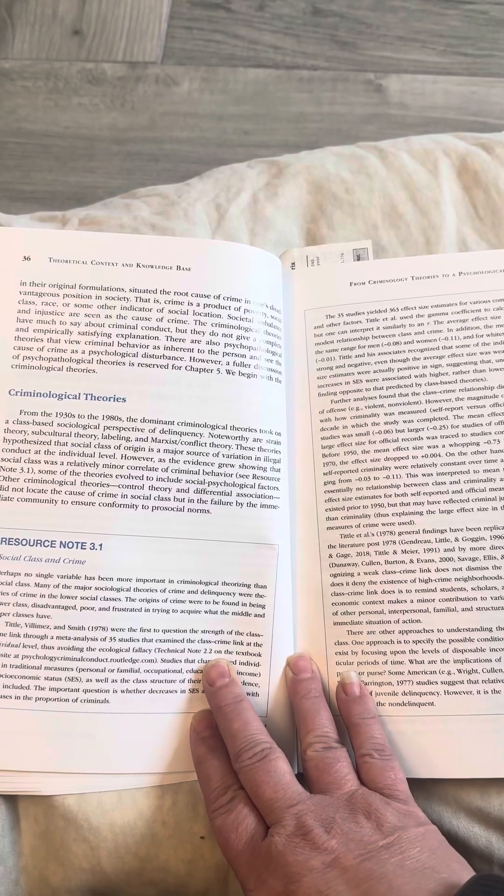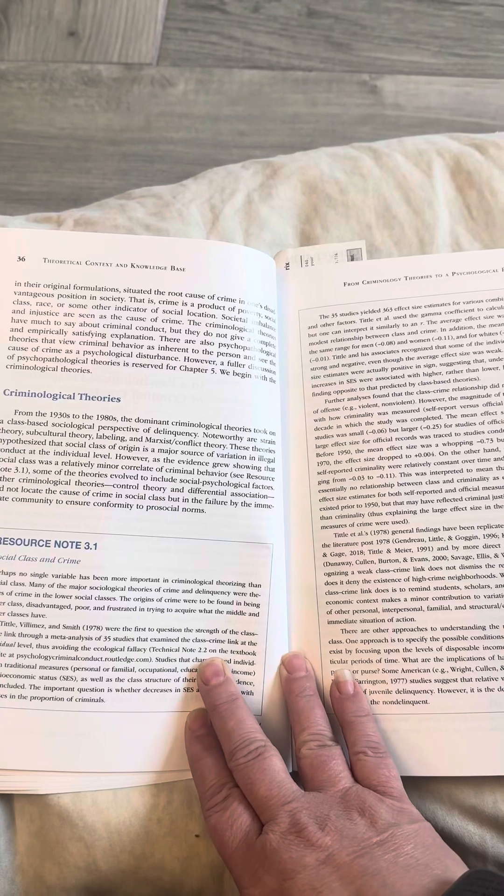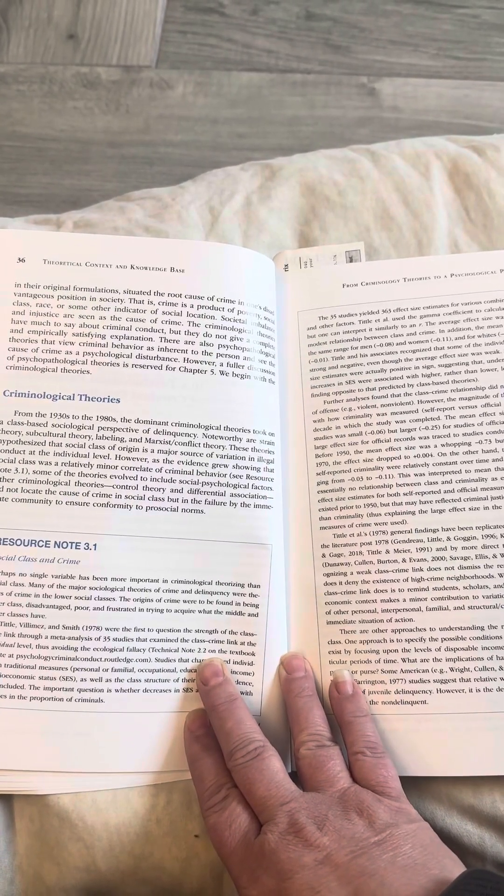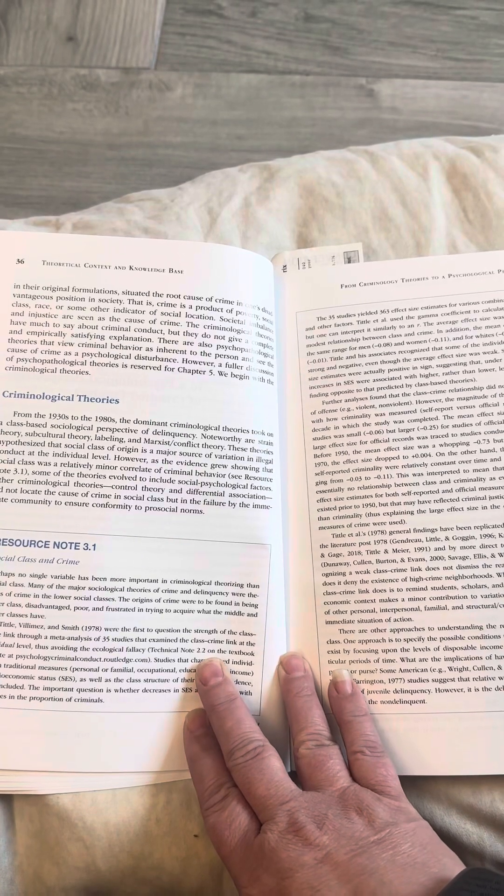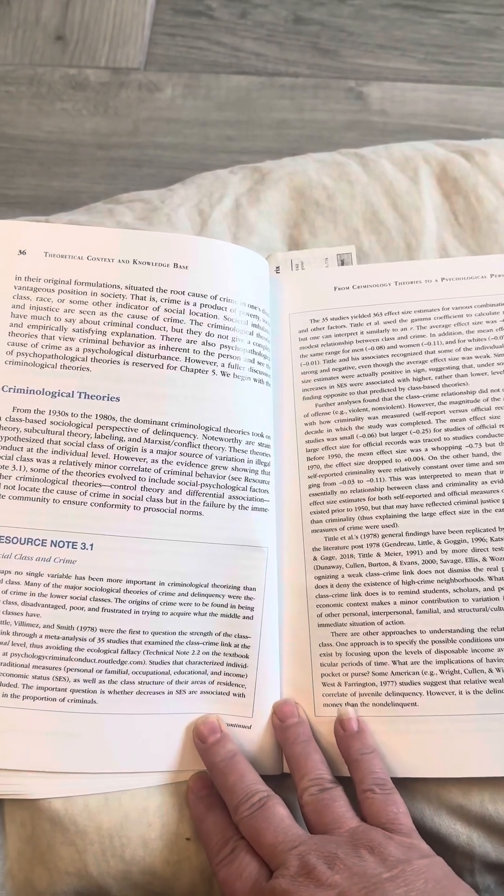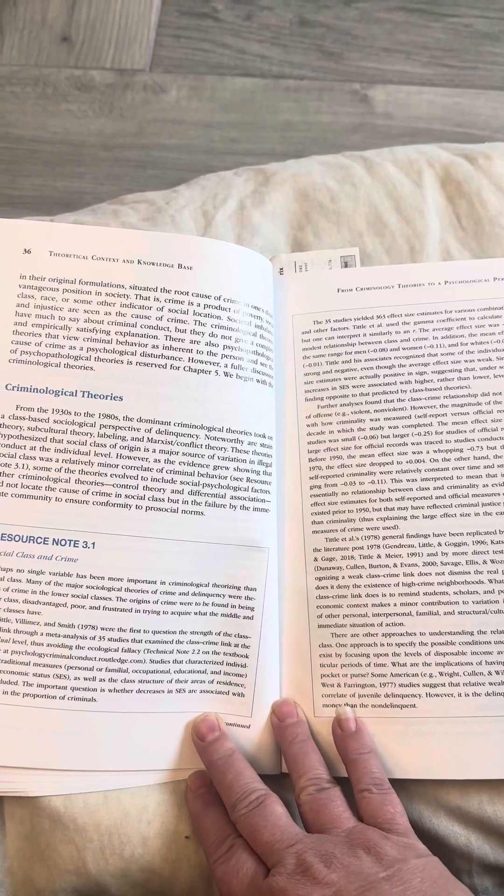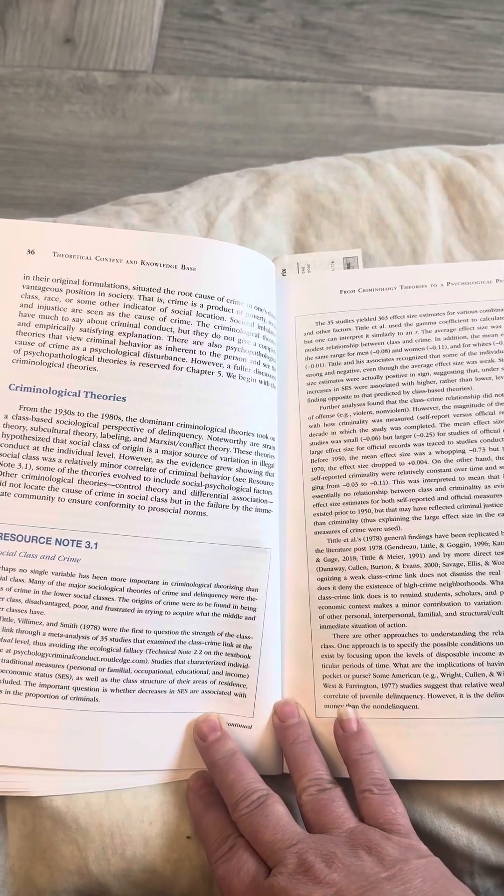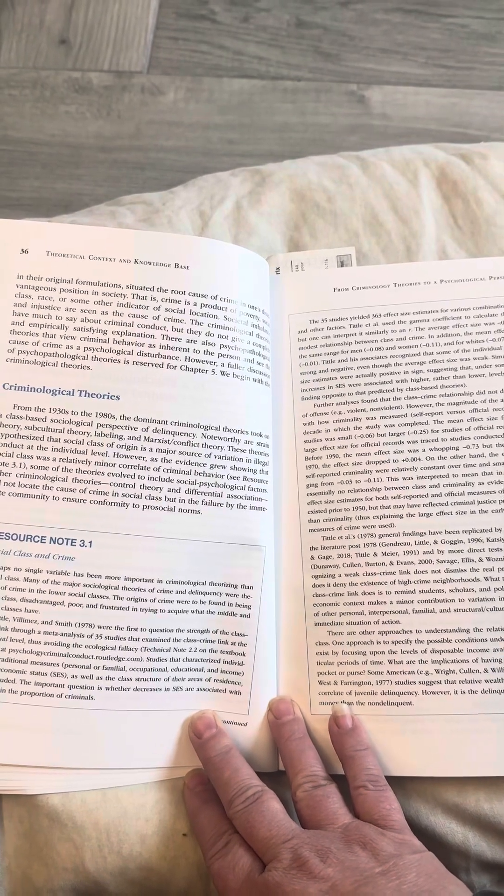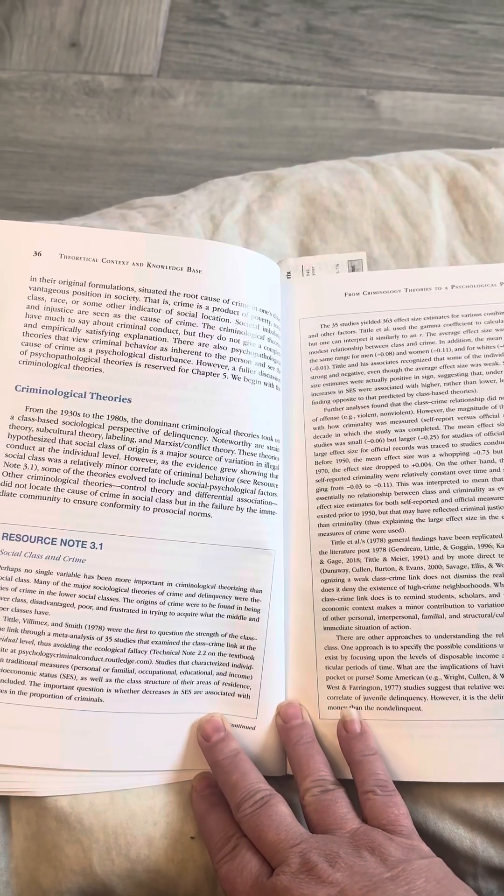Some of the theories evolved to include social psychological factors. Other criminological theories, control theory and differential association, did not locate the cause of crime in social class, but in the failure by the immediate community to ensure conformity to pro-social norms.